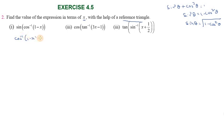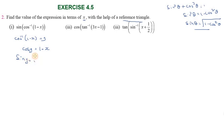Let cos inverse of (1 minus x) equal to y. Then cos y equals 1 minus x. Using the reference triangle, sin y equals sin of cos inverse of (1 minus x). We get sin y equal to the square root of 1 minus (1 minus x) squared.